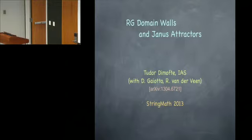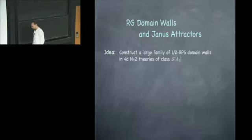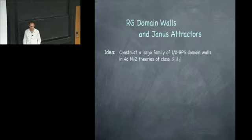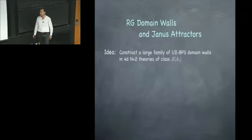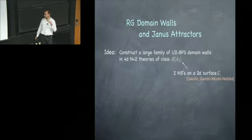Tudor Dinoff from IES presents work on RG domain walls, from a recent paper with Davide Gayoto and Roland van der Veen. The idea is to construct a large class of half-BPS domain walls in four-dimensional N=2 theories, specifically in 4D theories of class S, meaning they come from compactifying two M5 branes on a two-dimensional surface C in string theory or M theory.